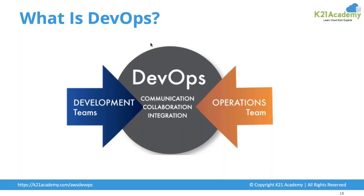We have one DevOps team or a DevOps engineer who takes care of the entire process — where the developer develops an application, then building it, testing it, deploying it, and monitoring it — all taken care of by a DevOps engineer. DevOps helps you collaborate, communicate, and integrate the development team and the operations team.